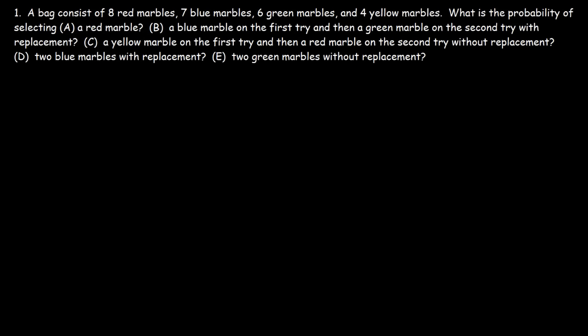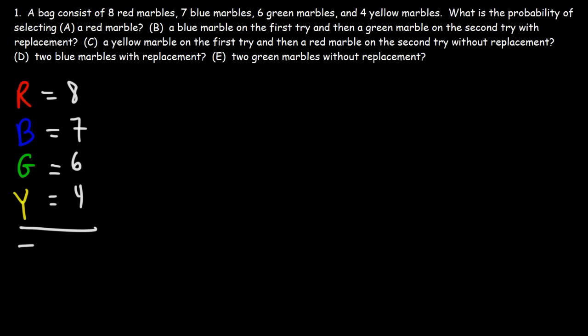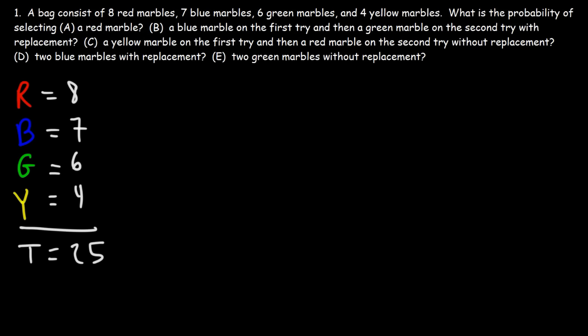Let's write out the marbles that we have. The first color is red, the second is blue, the third is green, and the fourth is yellow. We have eight red marbles, seven blue marbles, six green marbles, and four yellow marbles. Getting the total: six plus four is 10, eight plus seven is 15, and 15 plus 10 is 25. So we have a total of 25 marbles.